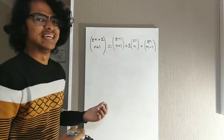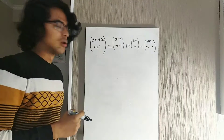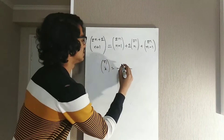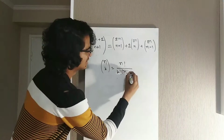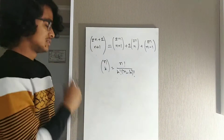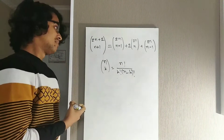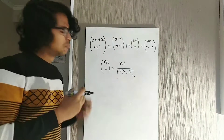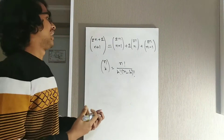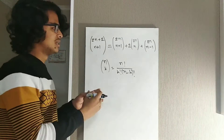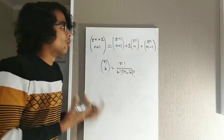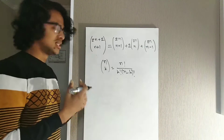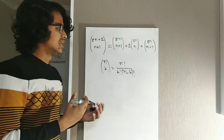When you first see it, maybe some of you can think about solving it using an algebraic method — using the formula n! divided by k! times (n-k)!. Maybe you'll be able to solve it that way, but you'd have to do a lot of really ugly, tedious calculation. And even if you succeed, you won't really be able to feel why it's true. That's why I will try to solve it using the double counting method.